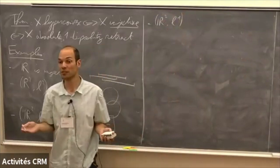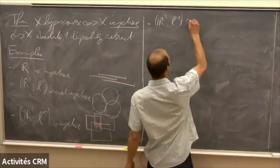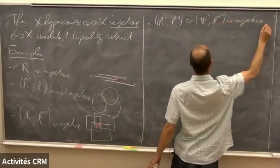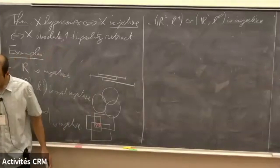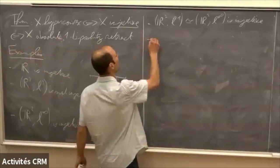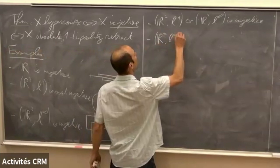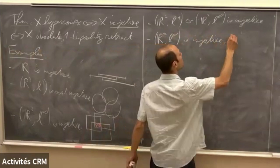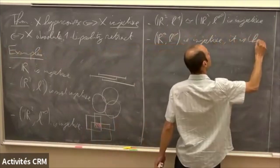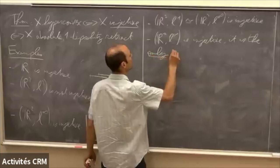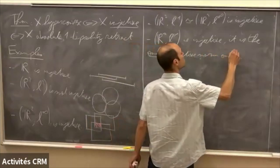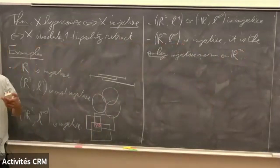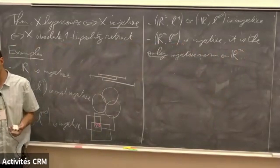What about R² with the L1 metric — is it injective? Yes, it is isometric to R² with L∞, so it is injective. In fact, Rⁿ with the L∞ norm is injective, and it is the only injective norm on Rⁿ. So injective metric spaces are really an L∞ geometry — piecewise L∞ spaces.